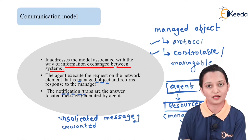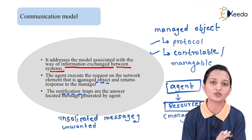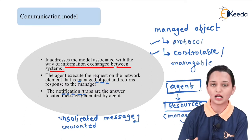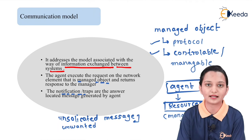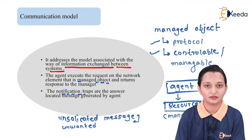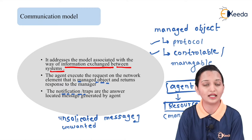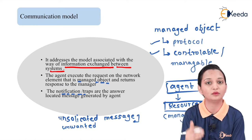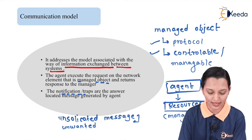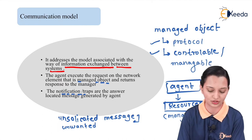Whatever notifications or traps there are, they can be sent along with the response to the sender. In the network management system, anyone can be a sender or receiver if they are able to control the system below them. Now we will understand the basic model of communication.